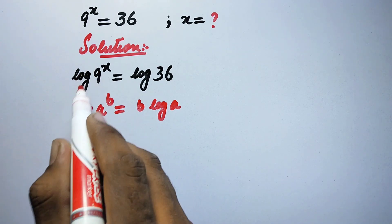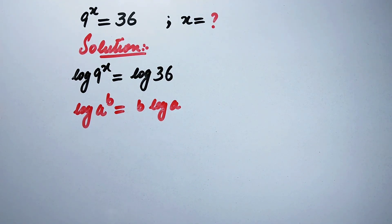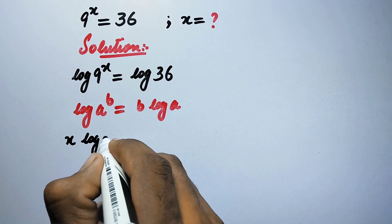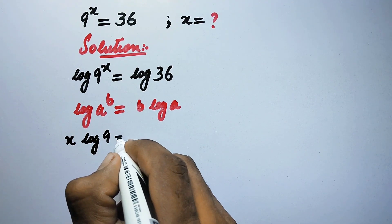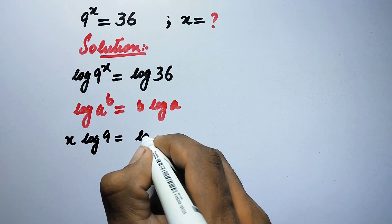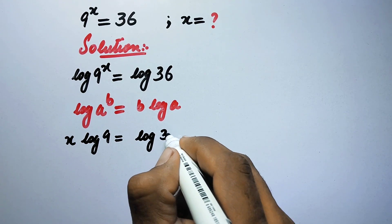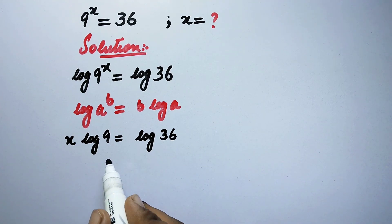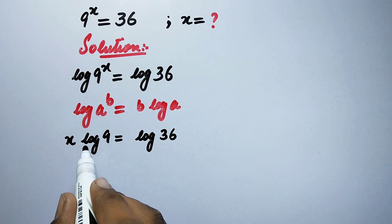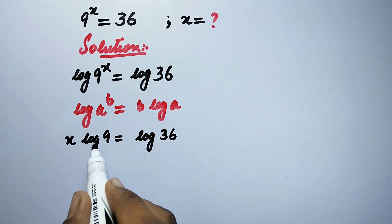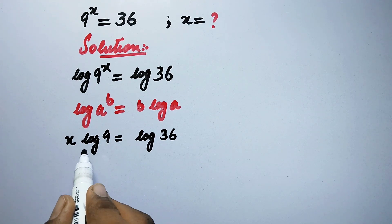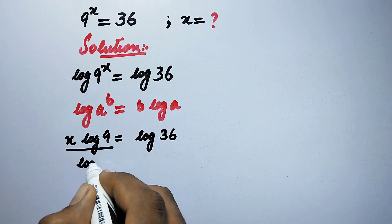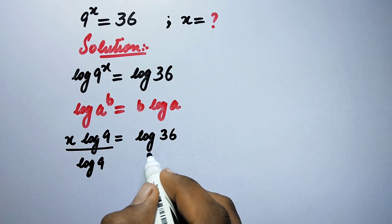So by following this property here we will write x times log of 9 is equal to log of 36. And since we have to find the value of x, so we need to eliminate this log of 9, therefore we will divide both sides by log of 9.